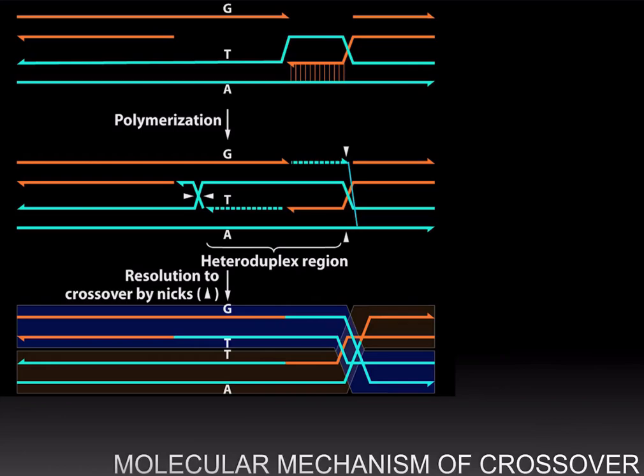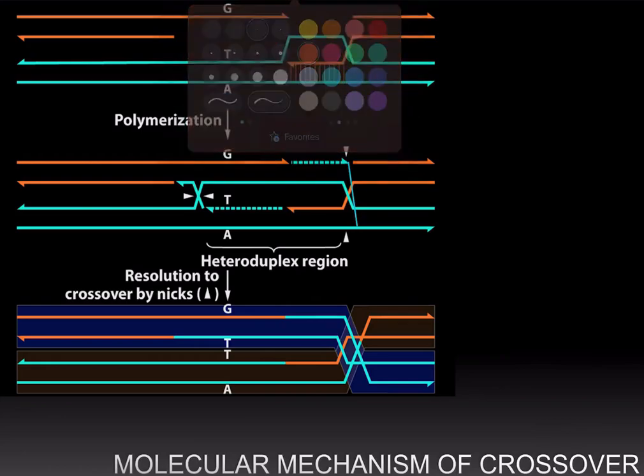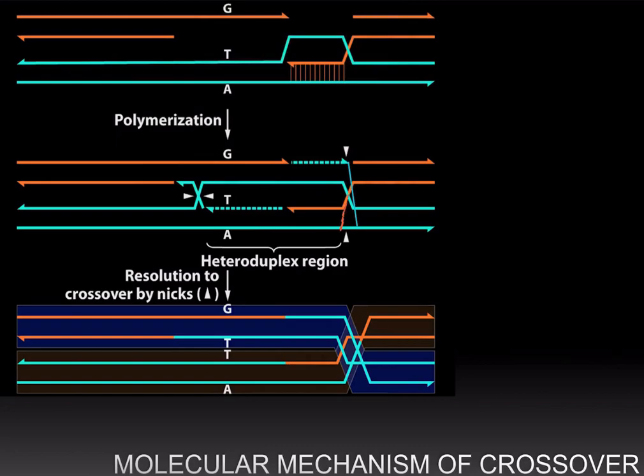and the bottom cyan strand is going to connect with the orange strand up there, whereas this orange strand is going to connect with the cyan strand over here. And this will result in a complete crossover.